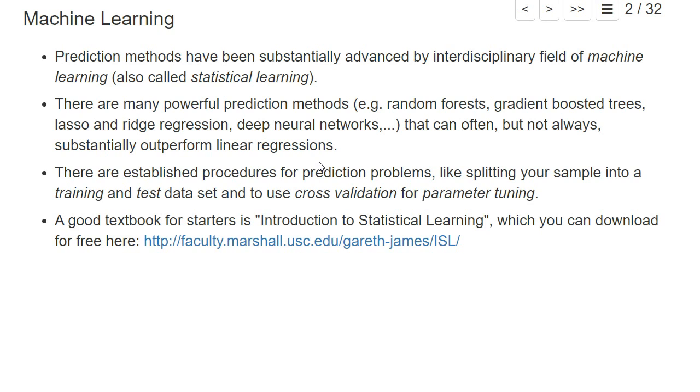In the previous chapter we used linear regression to predict future wine prices. However, there are many other methods you can use for predictions. The interdisciplinary field of machine learning has substantially advanced prediction model methods. There are methods called random forests, gradient boosted trees, lasso and ridge regressions, and deep neural networks that often, though not always, substantially outperform linear equations.